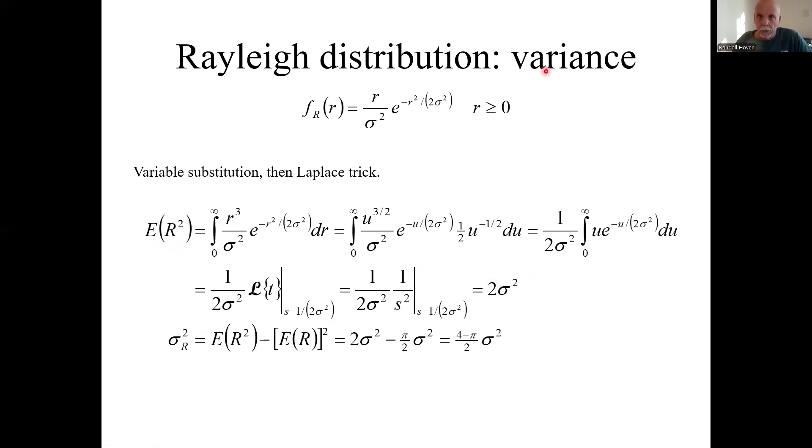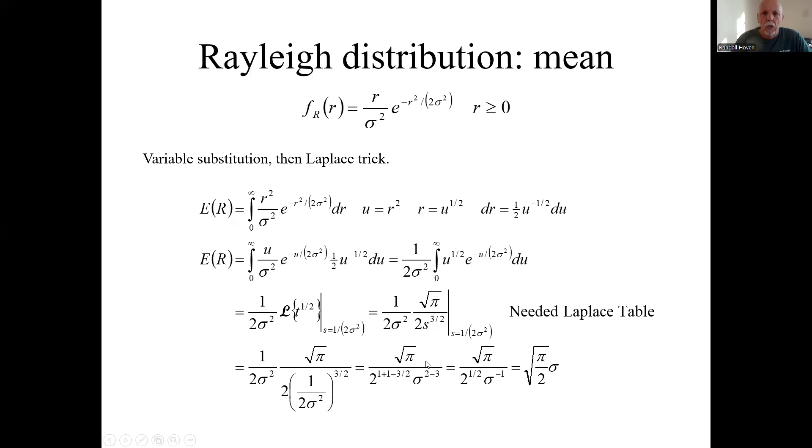The variance, which is what was asked for, is going to be that mean square minus the square of the mean. So it's the two sigma squared minus this thing squared.